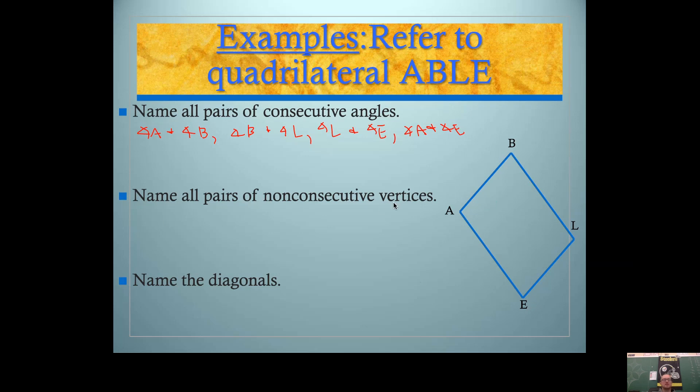Name all the pairs of non-consecutive vertices. Oh, we're talking about vertices. I wrote angle. If we're talking about vertices, that's a point. If we're talking about angles, that's why we have to have those angle marks. So point A is non-consecutive with point L. I know that because A is not next to L in the name, or I could just look at the picture. Point B is non-consecutive with point E. You could look at the picture or you could look at the name. These two vertices don't share a segment. That's the side of the quadrilateral.